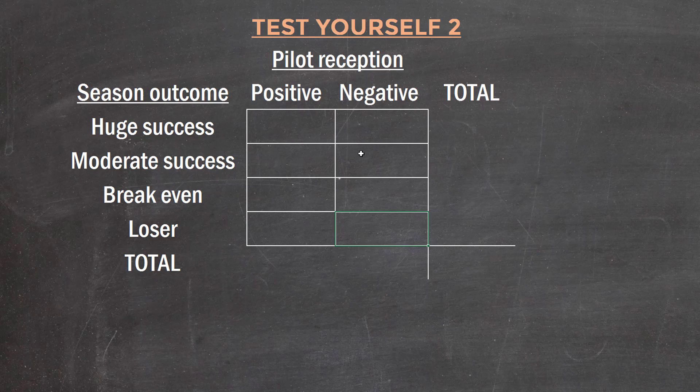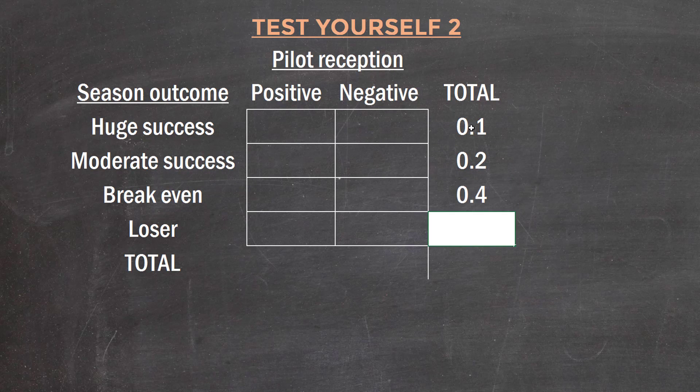The first piece of the question tells us that 10% of new shows are huge successes in the first season. So that's a marginal probability. 10% goes in here, 20% are moderate successes, 40% break even, and 30% are losers, totaling 100%.